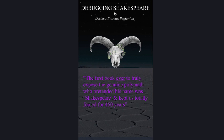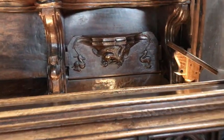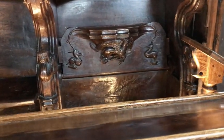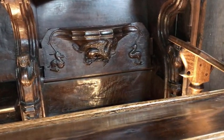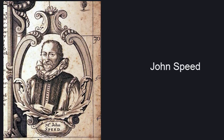Hello and welcome to my twelfth video introducing my new book 'Debugging Shakespeare.' In the last video we looked further into the origin of the carved dodo image at St Mary's Church, Nantwich, and how Jorius Hofnagel and his son might really have been John Speed, the well-known cartographer.